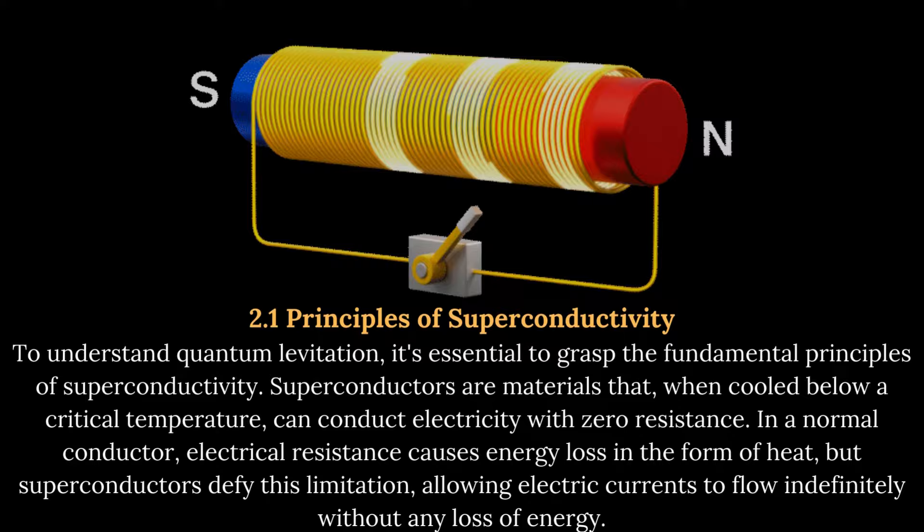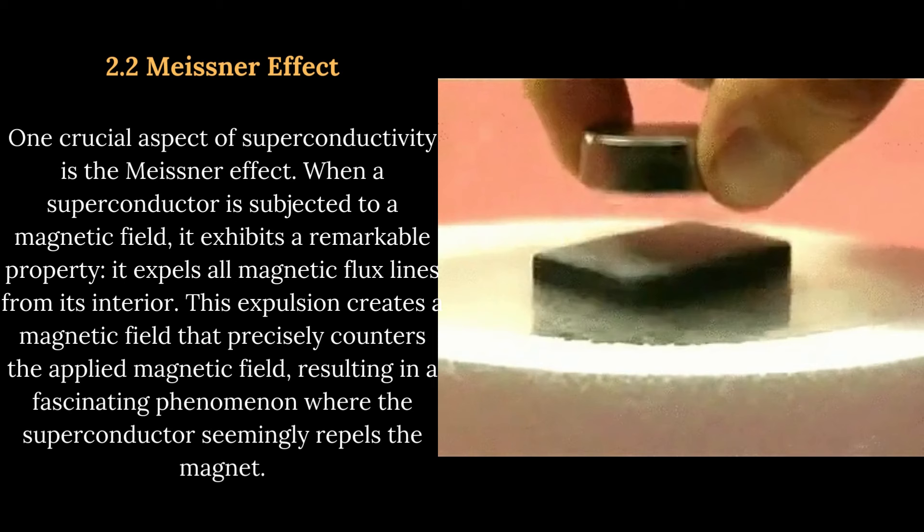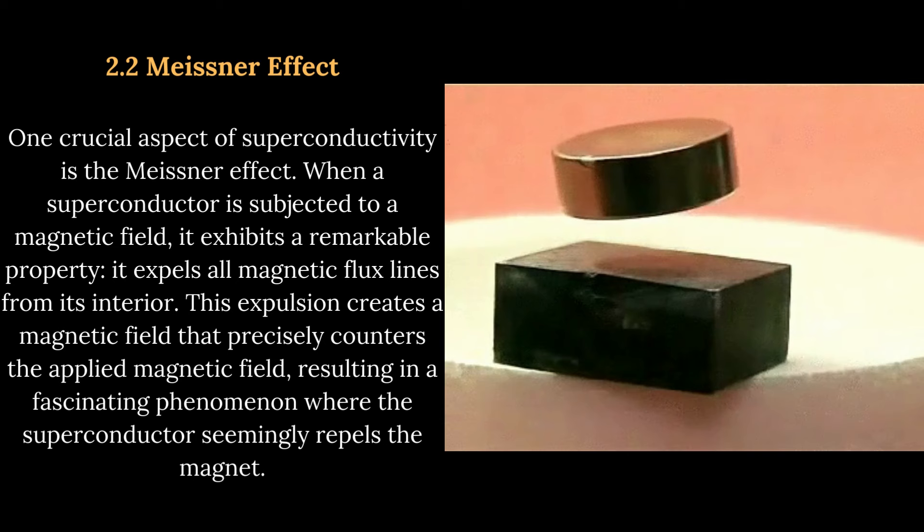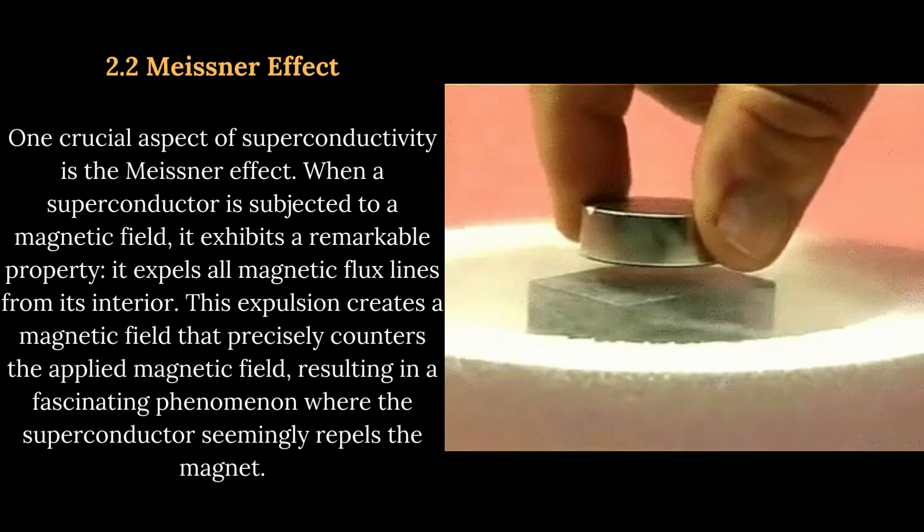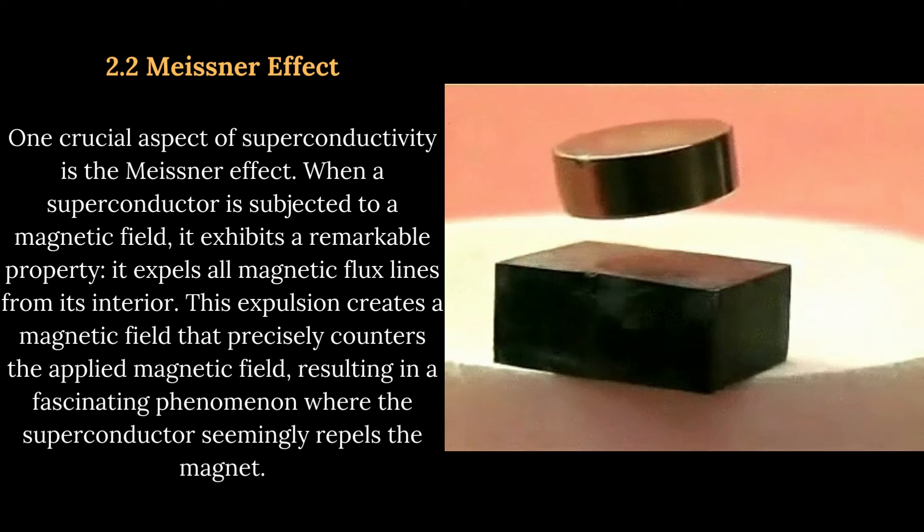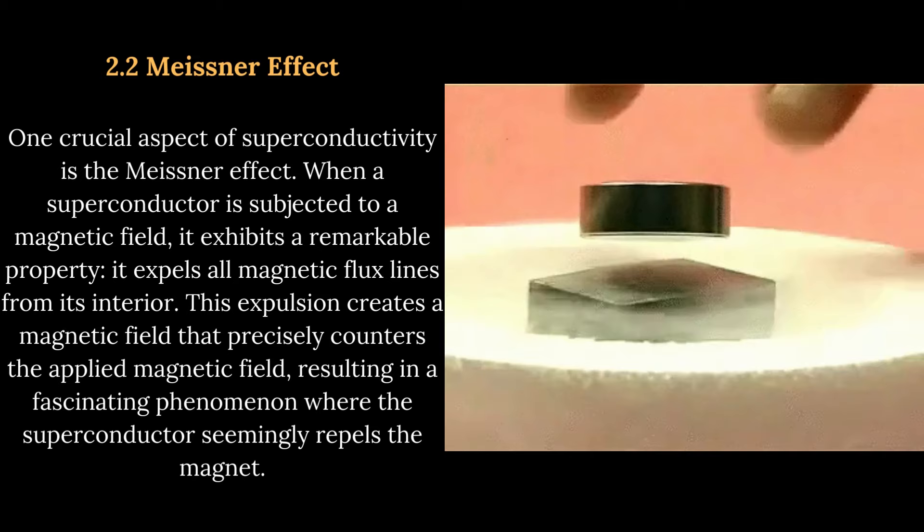Meissner Effect: One crucial aspect of superconductivity is the Meissner Effect. When a superconductor is subjected to a magnetic field, it exhibits a remarkable property: it expels all magnetic flux lines from its interior. This expulsion creates a magnetic field that precisely counters the applied magnetic field, resulting in a fascinating phenomenon where the superconductor seemingly repels the magnet.